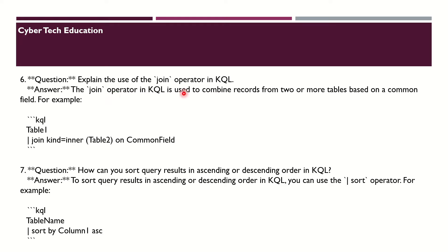The next question is: explain the use of the join operator in KQL. The join operator in KQL is used to combine records from two or more tables based on a common field. For example: TableOne | join kind=inner TableTwo on CommonField.